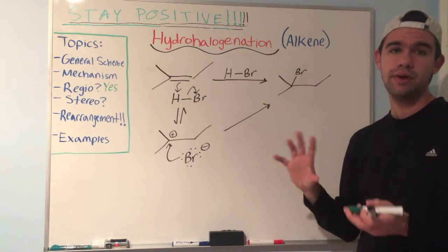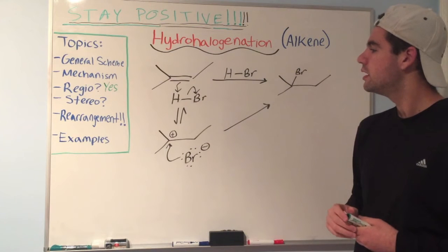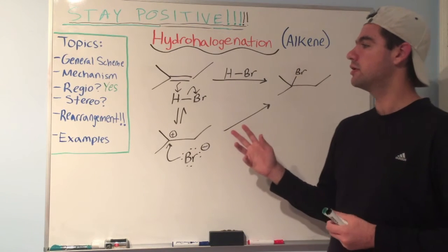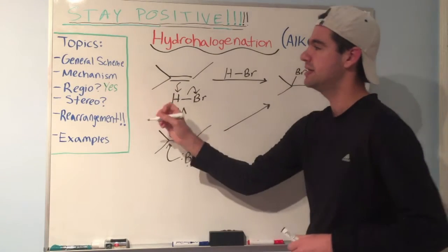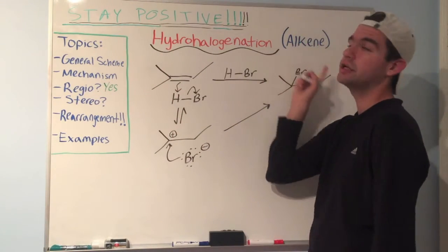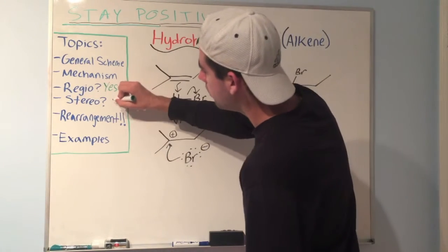And so you'll get a racemic mixture, you'll get the R configuration and the S configuration, given that you have a stereocenter. So in other words, the presence of the carbocation means that there is no stereospecificity for hydrohalogenation of alkenes. So let's write a no over here.